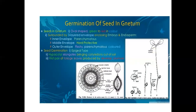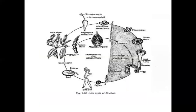Germination of seed in Natum: seeds in Natum are oval-shaped, green to brown in color, surrounded by three-layered envelopes enclosing embryo and endosperm. The inner envelope is parenchymatous, the middle envelope is hard and protective, and the outer envelope is fleshy, parenchymatous, and colored. Seed germination is epigeal type; the hypocotyl elongates, bringing cotyledons out of soil. The first pair of foliage nodes is produced by the developed plumule. This is the life cycle of Natum.